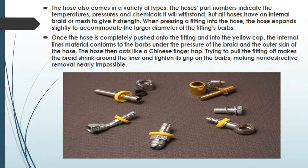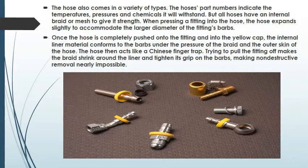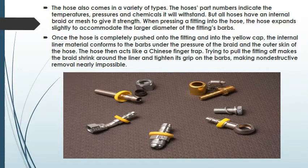When pressing a fitting into the hose, the hose expands slightly to accommodate the larger diameter of the fitting's barbs. Once the hose is completely pushed onto the fitting and into the yellow cap, the internal liner material conforms to the barbs under the pressure of the braid and the outer skin of the hose. The hose then acts like a Chinese finger trap — trying to pull the fitting off makes the braid shrink around the liner and tighten its grip on the barbs, making non-destructive removal nearly impossible.